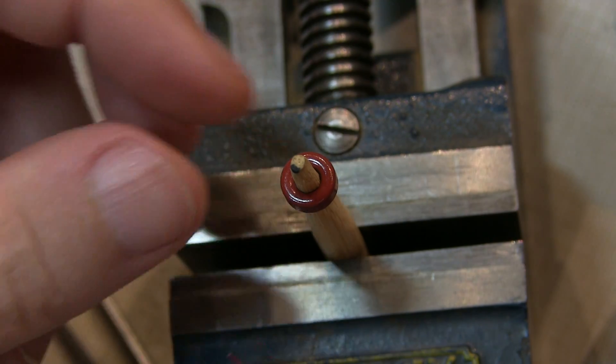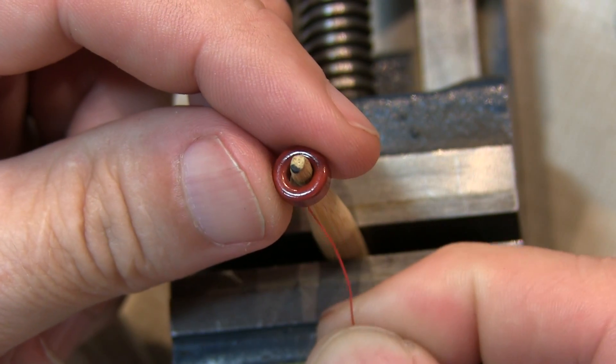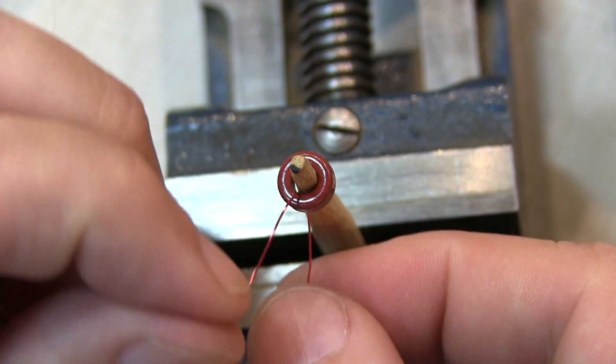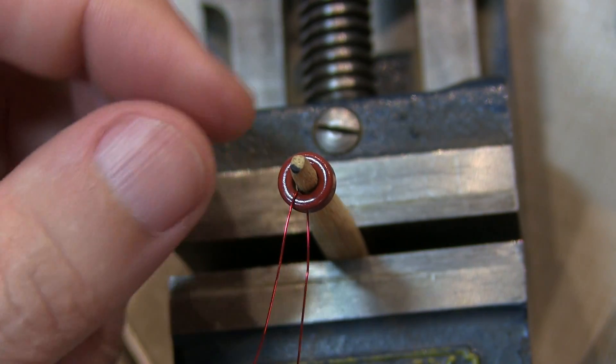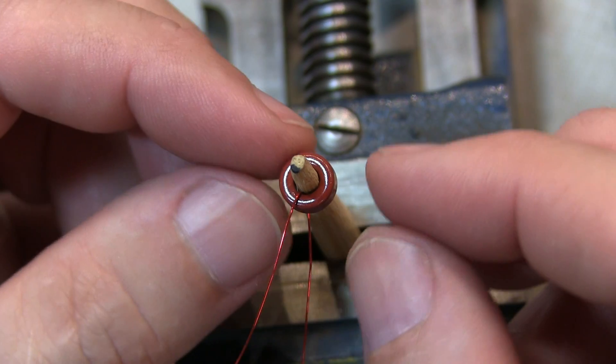When winding a toroidal core, each pass of the wire through the core, like that one pass just like that, that's considered one turn, even though it isn't completely all the way around the core there.